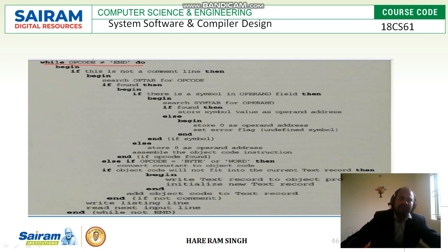While the opcode is not equal to END, this loop will keep going. Begin: if this is not a comment line, then begin searching the operation table for the opcode. If found, then begin: if there is a symbol in the operand field, search the symbol table for the operand. If found, use the symbol value as the operand address. Else, store 0 as the operand address and set the error flag. If there is no operand, store 0 as the operand address. Then assemble the object code instruction. End if opcode found.